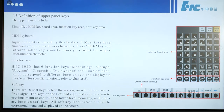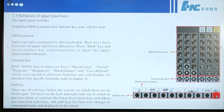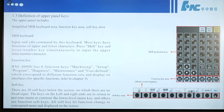There are 10 soft keys below the screen, on which there are no fixed signs. The keys on the left and right are to return to the previous menu or to continue to the lower-level menu. The others are function soft keys. All soft keys let the function change to the corresponding menu and display it on the screen.